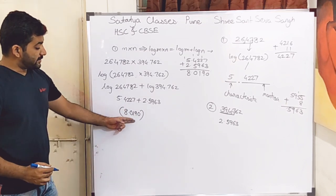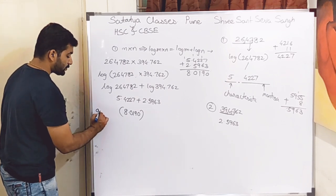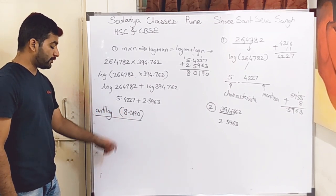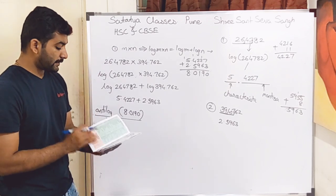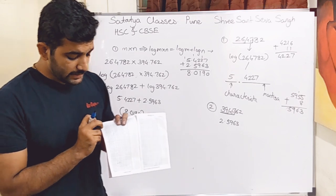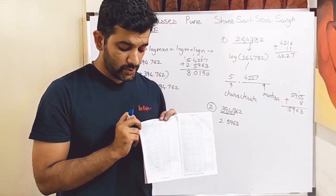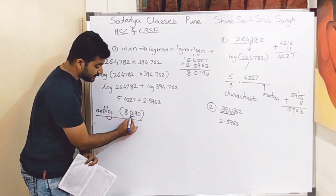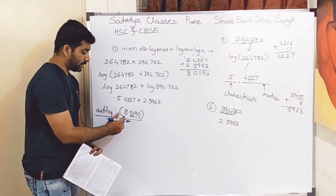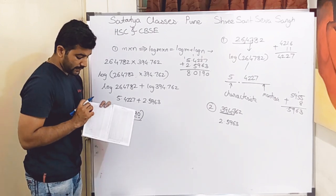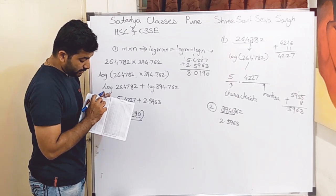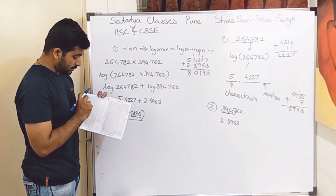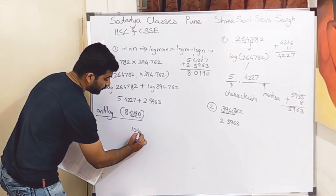Now we have to convert this log value back into number form, so we will find the antilog of 8.0190. In the log book, the antilog section starts from 0.00, 0.01, 0.02, and so on. The log table tells us to select the first four digits after the decimal point. We look up 0.01 in the antilog table — row 0.01, column 9 — and get 1042. The mean difference for 0 adds nothing, so the antilog mantissa is 1042.